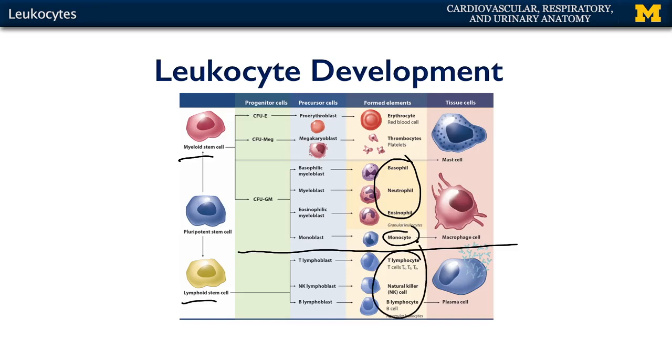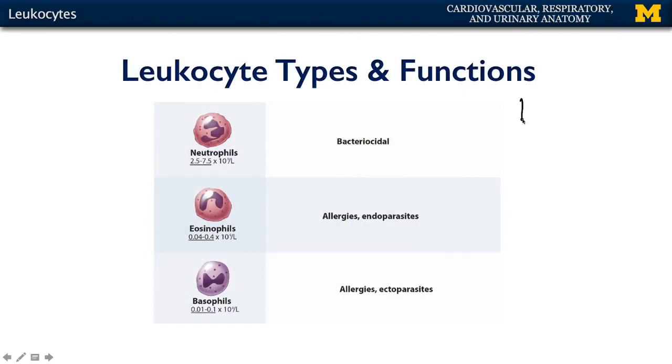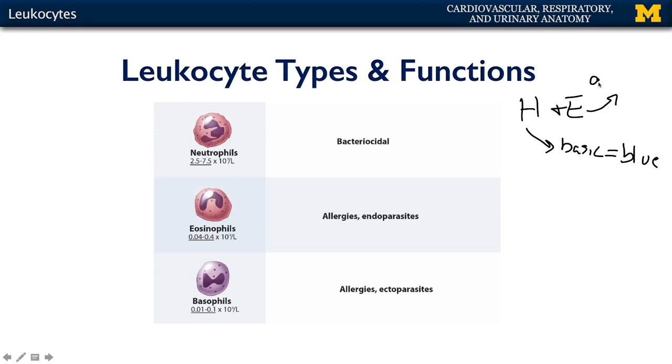Light microscopy — using a light microscope to view tissues and their constituent cells — is only possible through the use of certain dyes and stains so that we can highlight the cells and their features. One very popular stain is called hematoxylin and eosin, or just H&E for short. Hematoxylin is going to stain basic structures blue, whereas eosin is going to stain acidic structures red.